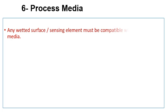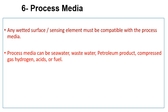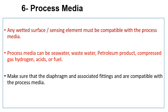Our final consideration is process media, which is also an important factor when selecting a pressure transmitter. Any wetted surface or sensing element must be compatible with the process media. Process media can include sea water, waste water, petroleum products, compressed gas, hydrogen, acids, or fuel. Make sure that the diaphragm and associated fittings of the pressure sensor are compatible with the process media.